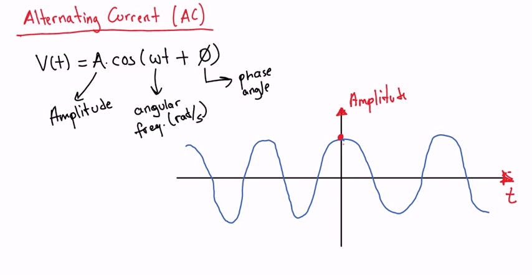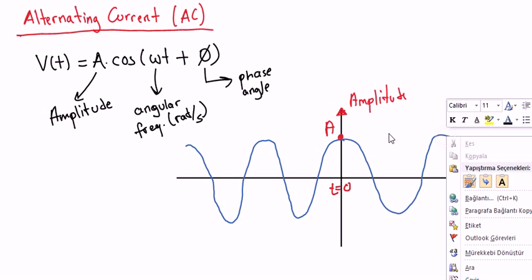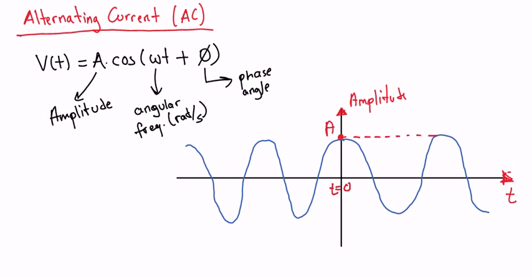And since this is a cosine function, it starts or it takes the value of 1 and A times 1 is A at T equals 0. Here is T equals 0 and it's going to take the same value again after a period time T which can be written as 1 over F, F here being the frequency in Hertz.